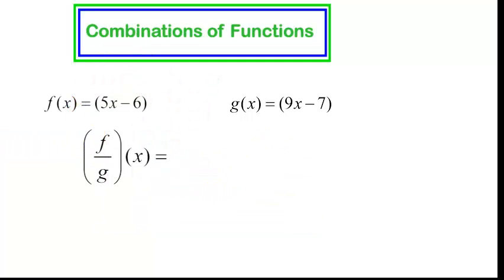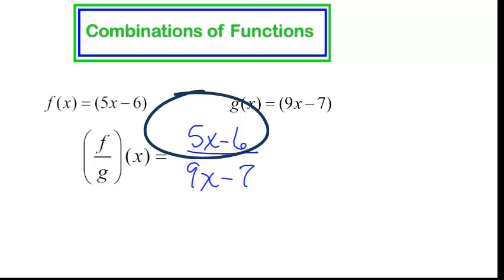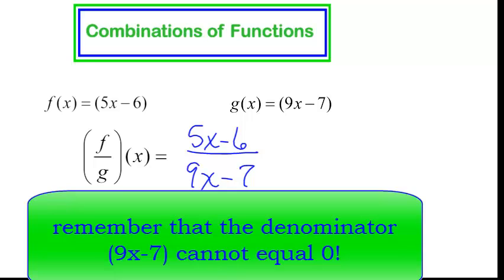This is (f/g)(x). What does that mean? That means f(x), which is 5x minus 6, divided by g(x), which is 9x minus 7. I can't factor either one of those, so nothing will cancel out. Please don't tell me you're trying to cancel these x's. In the numerator, we have 5x minus 6. In the denominator, we have 9x minus 7. Nothing cancels. We're done. All you had to do is write f(x) over g(x).